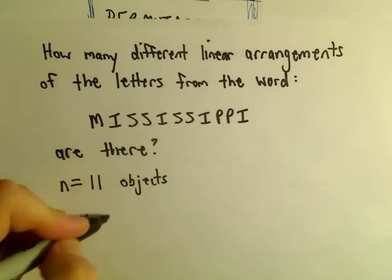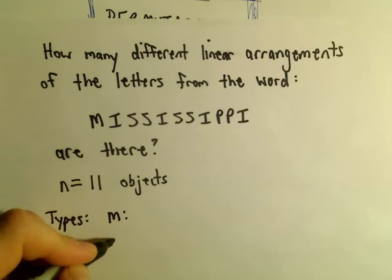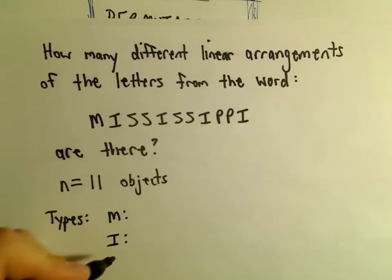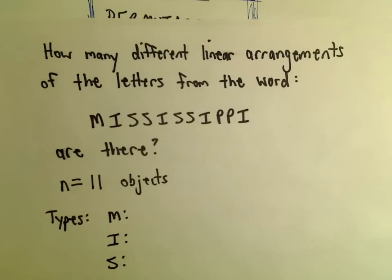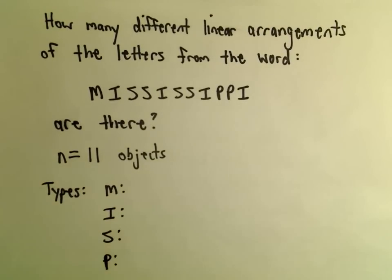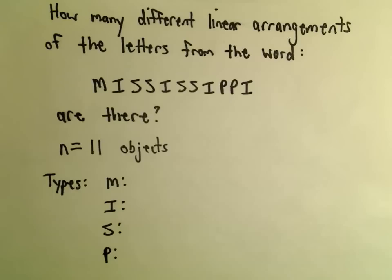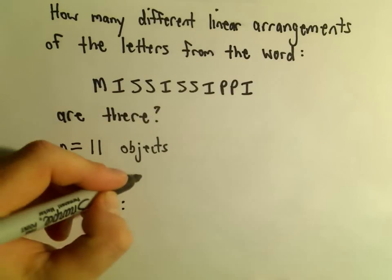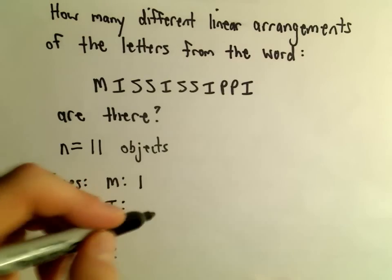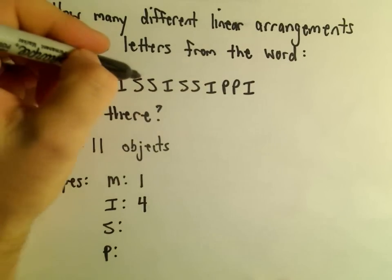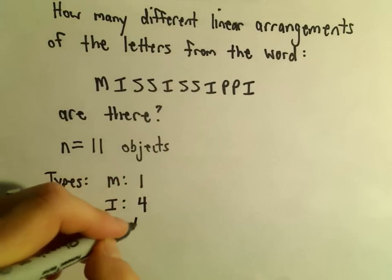The different types of objects we have are different types of letters. We've got M's present, at least one of those, we've got I's in there, we have S's in there, and it looks like we have P's in there as well. We're just going to count: we've got 1 M, we've got 1, 2, 3, 4 I's, we have 1, 2, 3, 4 S's.